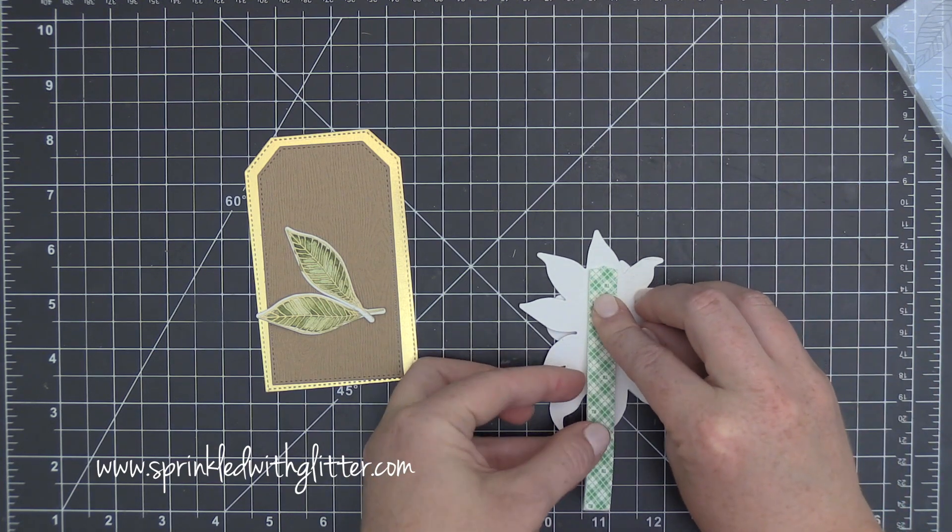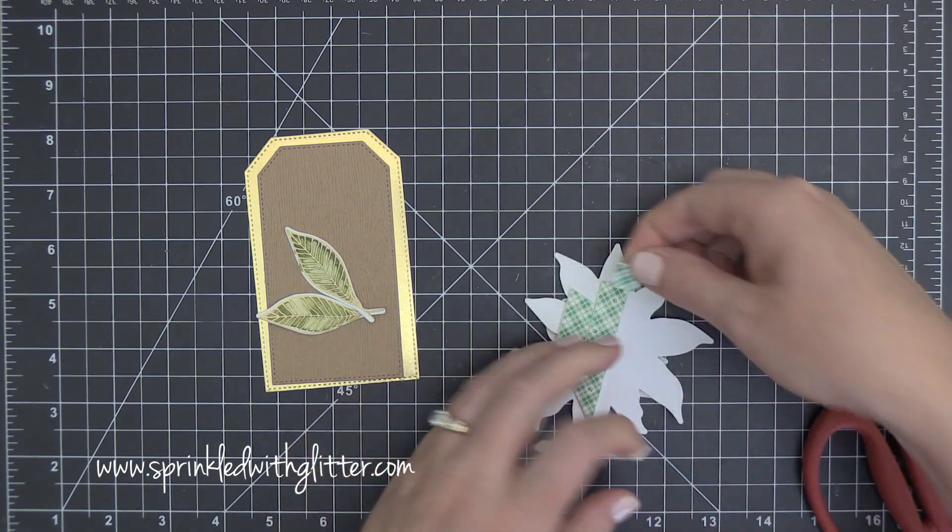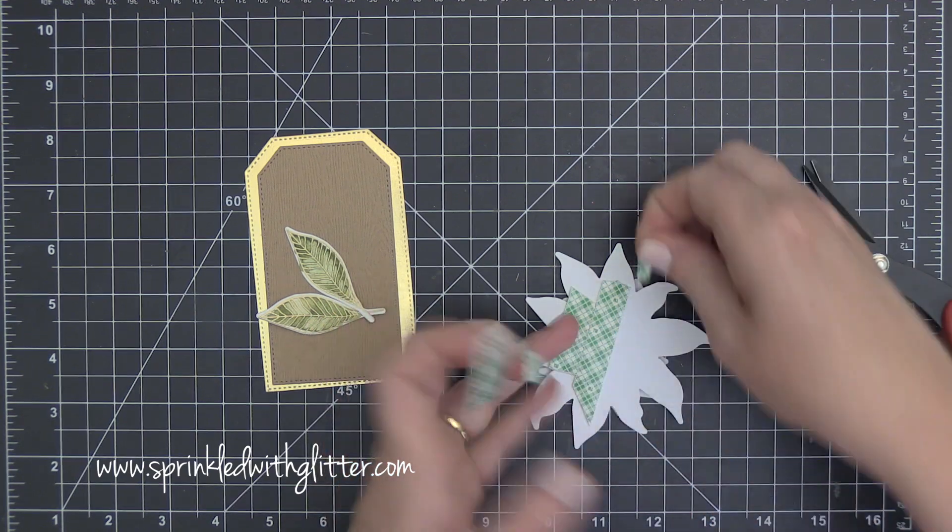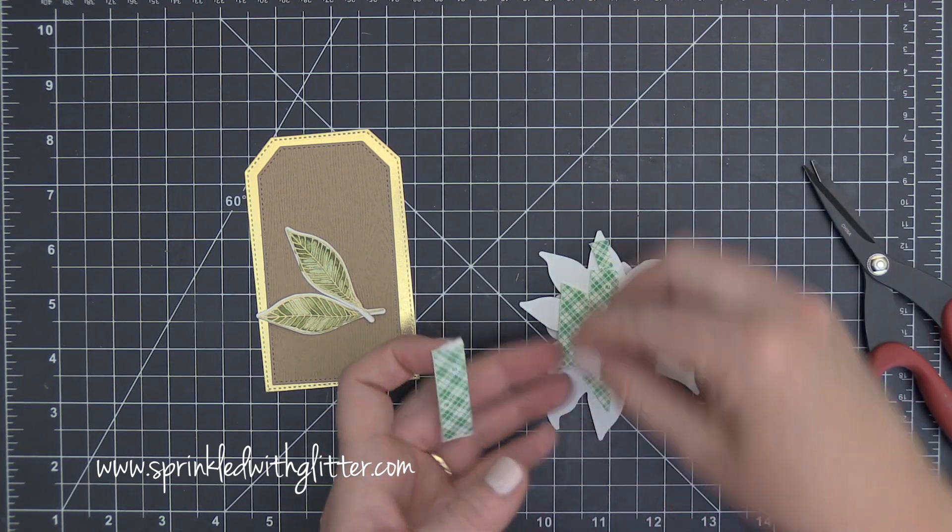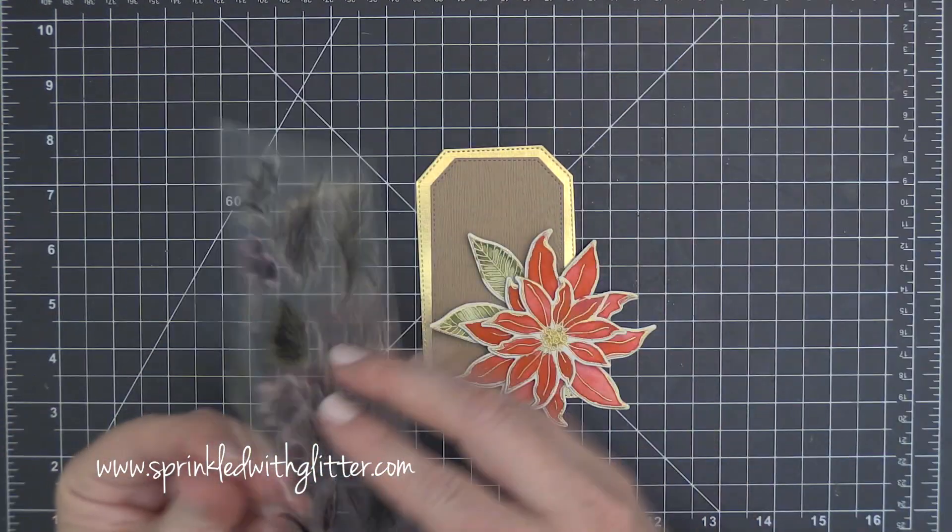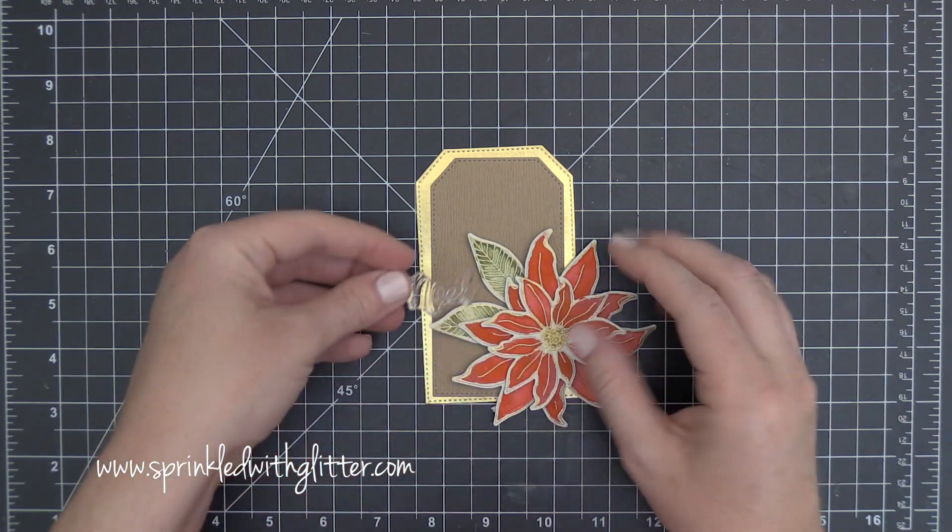I really wanted to add even more dimension to this flower so to adhere it onto the front of my tag I'm just adding a little more foam adhesive. Now you'll notice here that I'm only adding it to the left part of this poinsettia and that's because I'm going to allow the right side to kind of hang over the edge of that tag and I don't want that foam adhesive to show from the back.